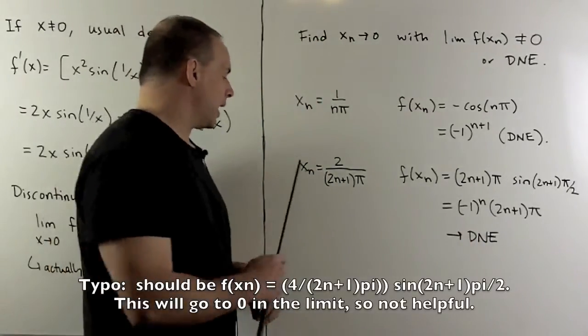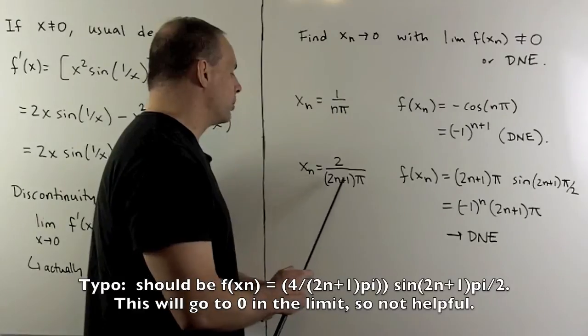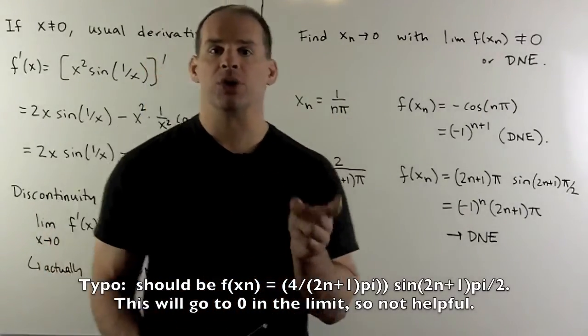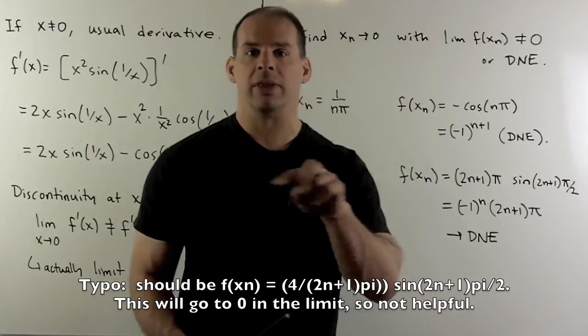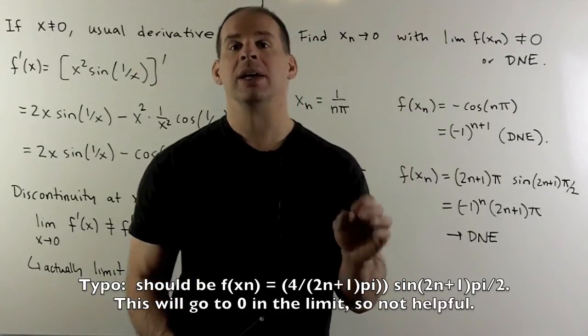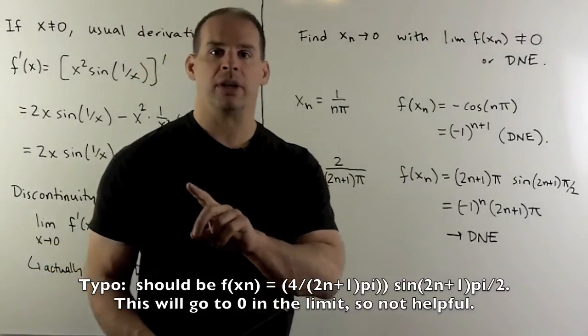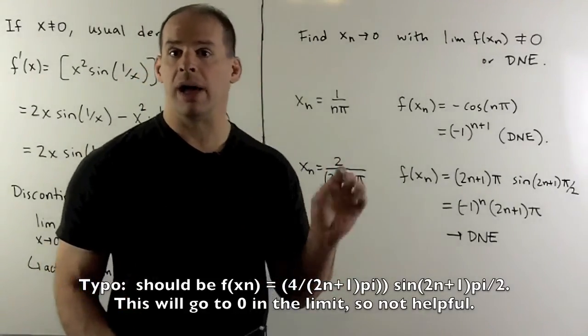We could also try x_n equal to 2/(2n+1)π, so odd times π. This will make the cosine go away, and then we can work with the sine part. In either case, we see that we have a discontinuity for the derivative at x equals 0, as promised.